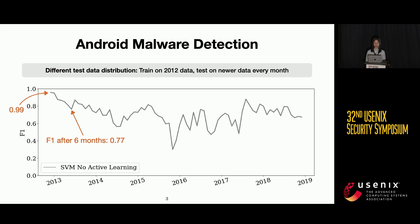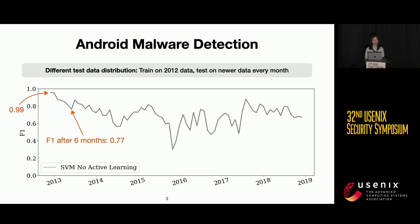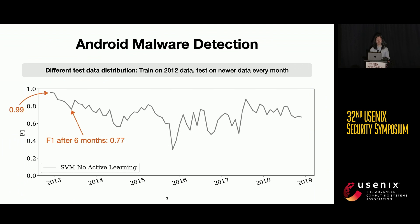If we have a different test data distribution and test a classifier continuously over time, the test performance drops a lot. The F1 score of a classifier that was just trained was around 0.99. But shortly after deploying the classifier for six months, the F1 score drops to only 0.77. So Android malware classification hasn't been solved, and it seems like it still doesn't work that well. This is typically called the concept drift problem in the community.